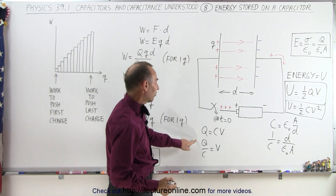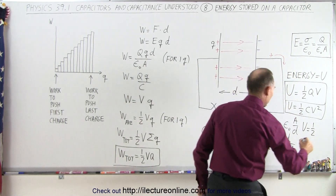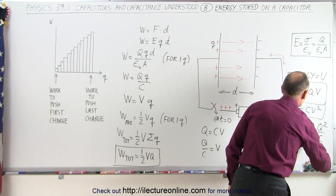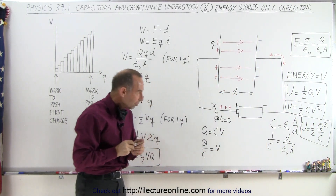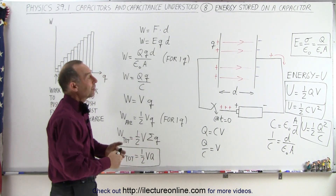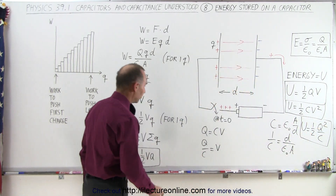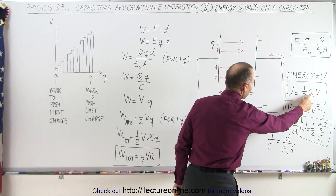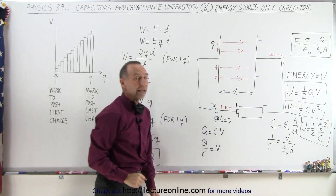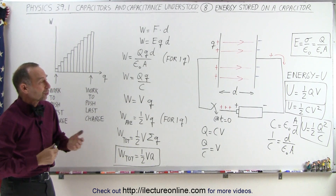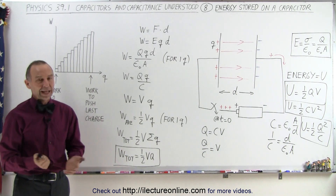And finally, if we replace V by Q over C, we can say that U equals one-half Q squared divided by C. So the amount of energy on a capacitor is one-half Q times V, but it can also be written as one-half C V squared or one-half Q squared over C, simply by using the definition Q equals C times V in either direction. Those are the three equations that describe the energy stored on a capacitor in terms of charge, voltage, or capacitance. And that's how it's done.